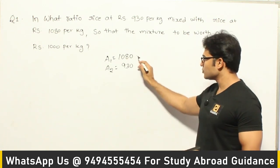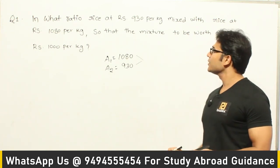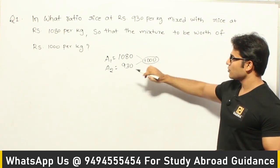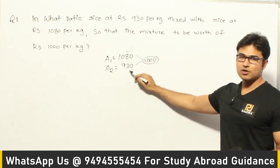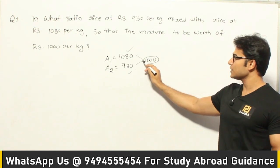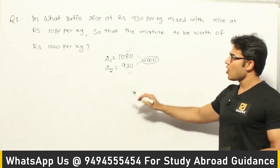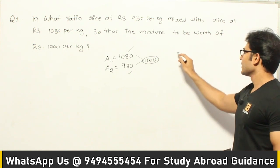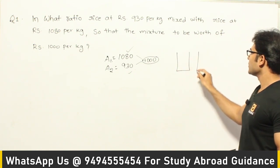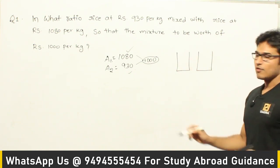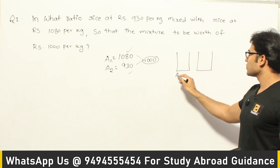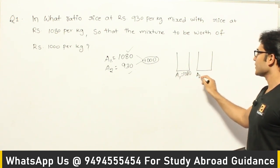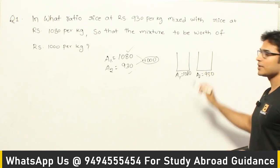We are going to mix these two in such a way that the final average is 1000 rupees. We are not going to sell at the high price or the low price — we want to sell at this middle price. One bag has rice costing 1080 per kg, and the other bag has rice costing 930 rupees per kg.